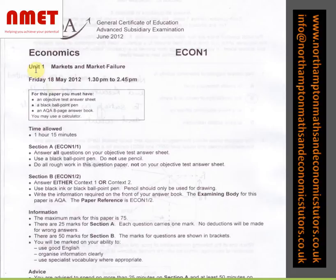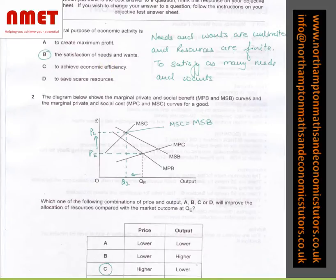The examination paper is from summer of 2012. First question is the central purpose of economic activity is the satisfaction of needs and wants. We know by definition that needs and wants are unlimited and resources are finite. Therefore we try to satisfy as many needs and wants as possible.